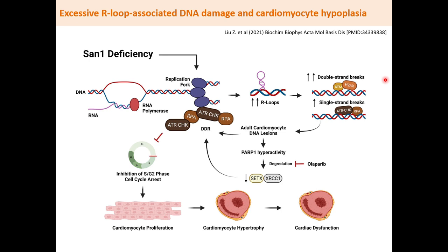R-loops are also involved in cardiovascular diseases. For example, senataxin-associated exonuclease SAMHD1 is a helicase that resolves R-loops. Its deficiency, such as SAMHD1 knockout, can cause excessive R-loop accumulation. Excessive R-loops are accompanied with increased DNA damage, impaired cardiomyocyte proliferation, small heart cell numbers, cardiomyocyte hypertrophy, and heart disease.